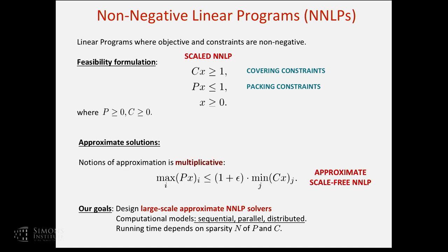A technical detail: what do I mean by ε-approximation? I mean a ±ε in this scaled version, which you should really think about as a multiplicative approximation in the original formulation. In a scale-free way, you want to find an x such that this kind of relation holds. Standard machinery gives additive approximations, but I argue that in this context the multiplicative approximation makes sense.